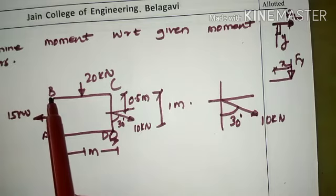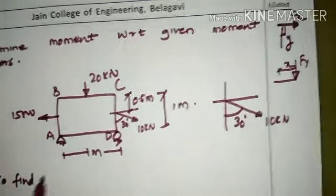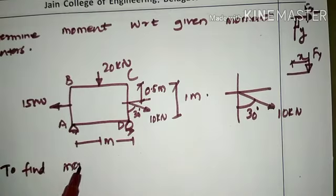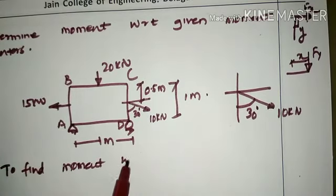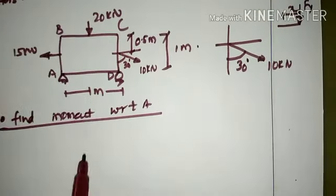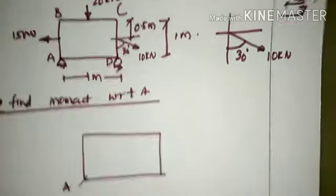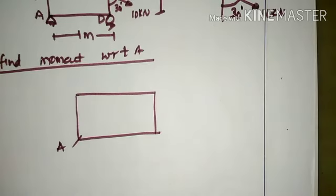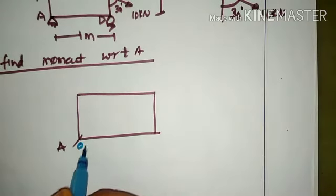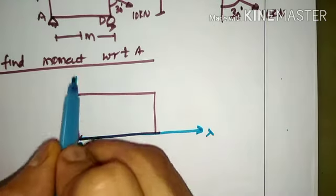To begin, we find moment with respect to point A. When considering moment with respect to A, A will be the origin where the coordinates are 0,0. All horizontal directions will be x and all vertical directions will be y.